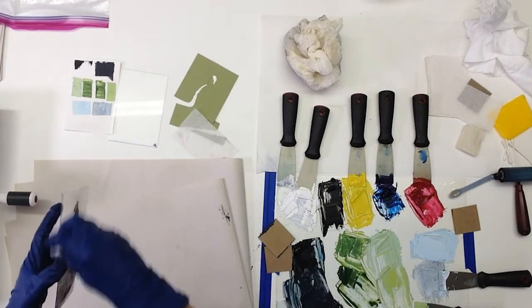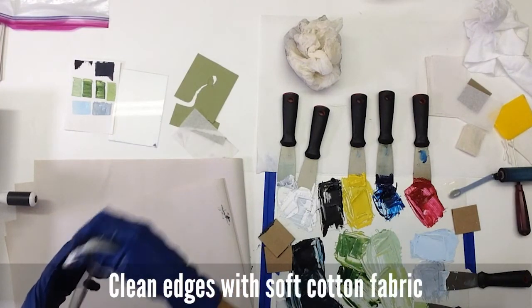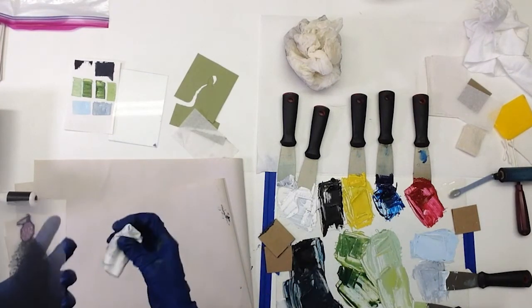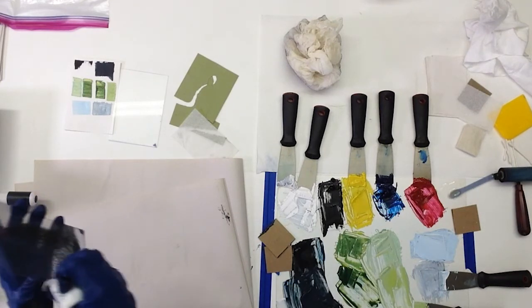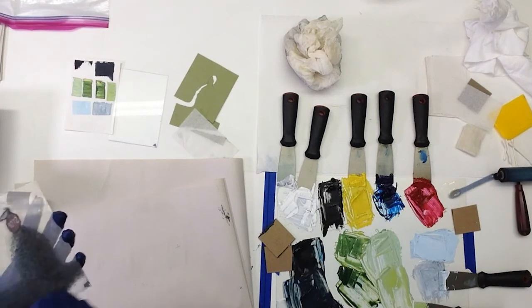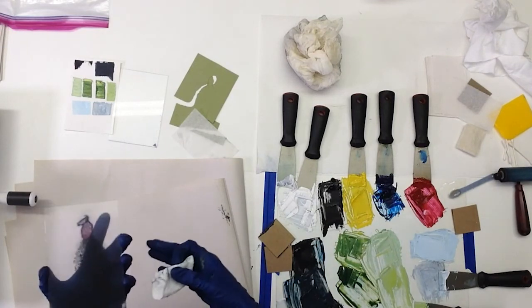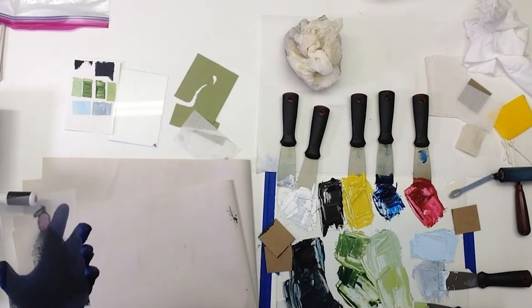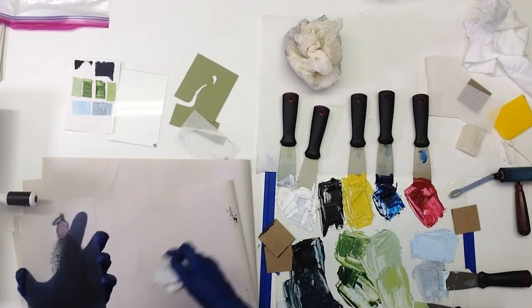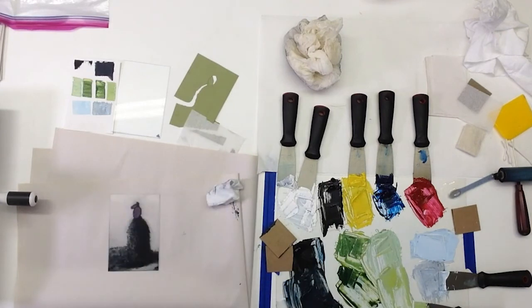And the last step will be to clean the edges of the plate as much as possible. This will ensure when the plate prints, you won't have a dark line going around the plate in the final print. It's also important to clean off the back of the plate, so as you're printing the plate through the press, no ink slides out from underneath the plate onto the paper. Now we're ready to print.